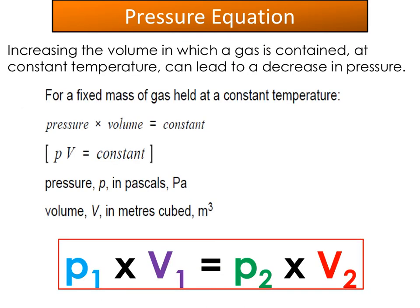Triple students also need to know the pressure equation. Increasing the volume of a gas at constant temperature decreases the pressure, because with the same temperature in a larger container there are fewer particles per unit area, fewer collisions, and therefore lower pressure. For a fixed mass of gas at constant temperature, the equation given on the physics equation sheet is: pressure multiplied by volume equals a constant, pV = constant. Pressure is measured in Pascals and volume in metres cubed.